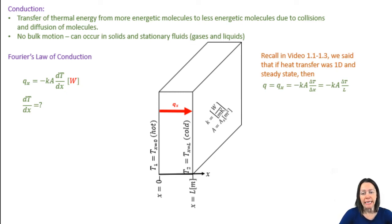We said that if the heat transfer were one-dimensional and steady state, we could say that Q is equal to negative Ka times T2 minus T1 divided by L. Well, now we're going to show you why that's the case.